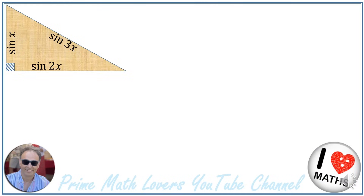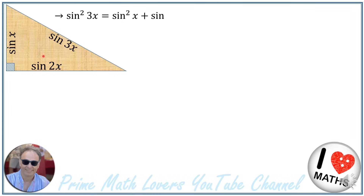The Pythagorean theorem states that in a right angle triangle, the square of the length of the hypotenuse is equal to the sum of squares of the lengths of the other two sides. This means that sine squared of 3x is equal to sine squared of x plus sine squared of 2x.